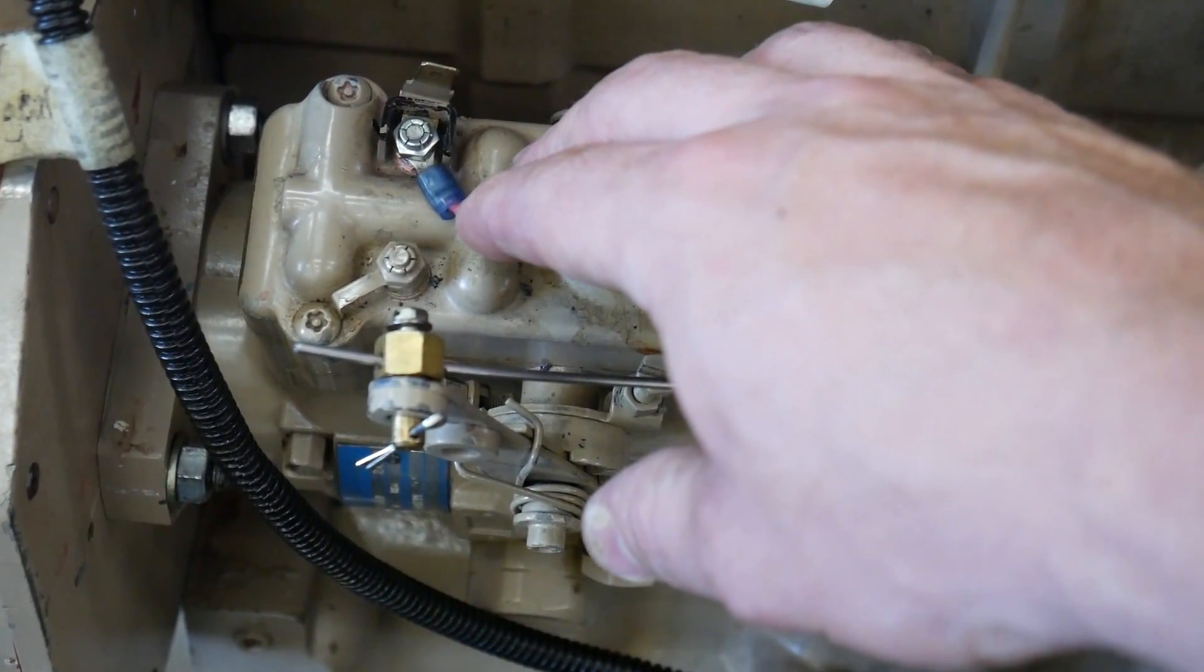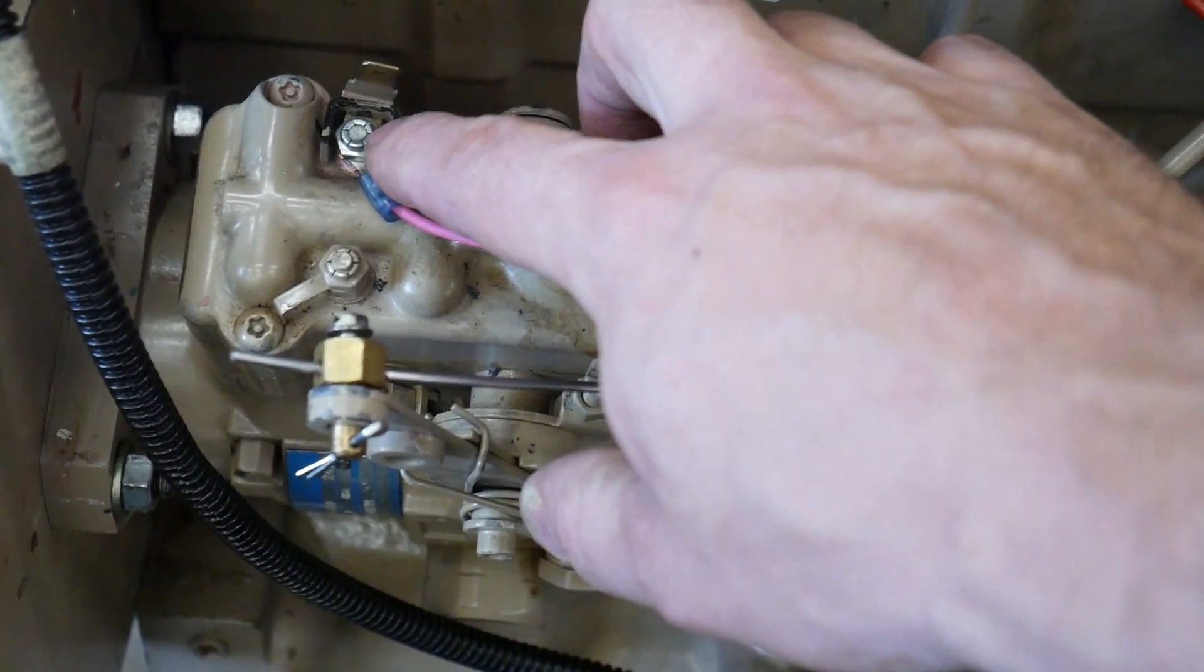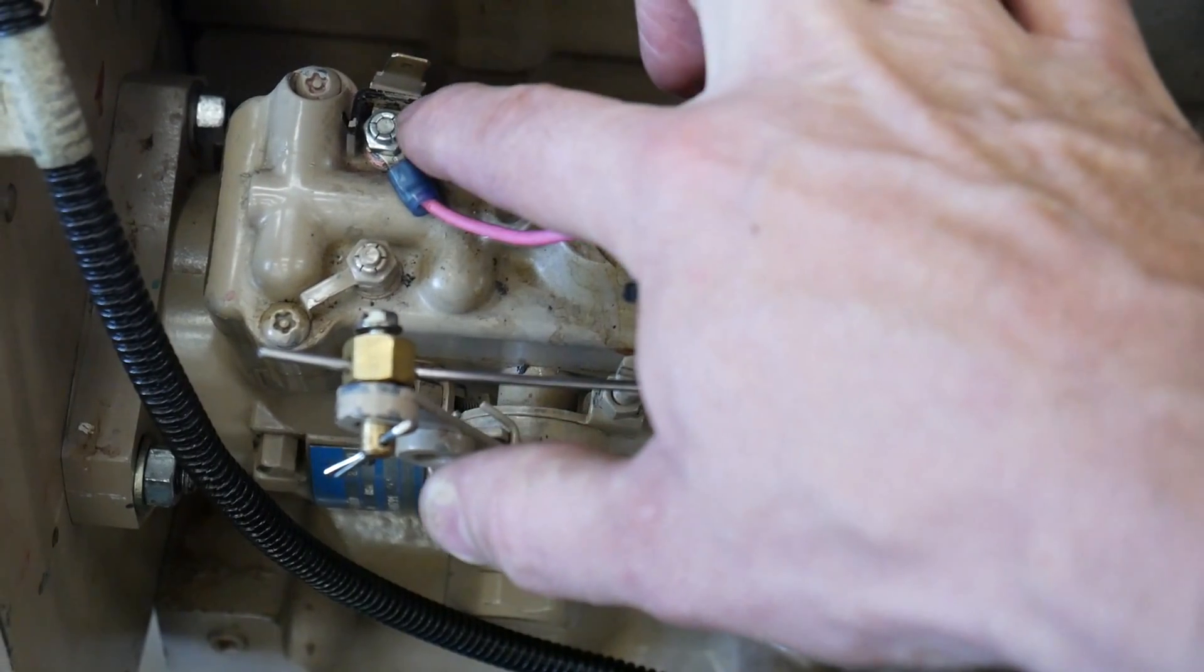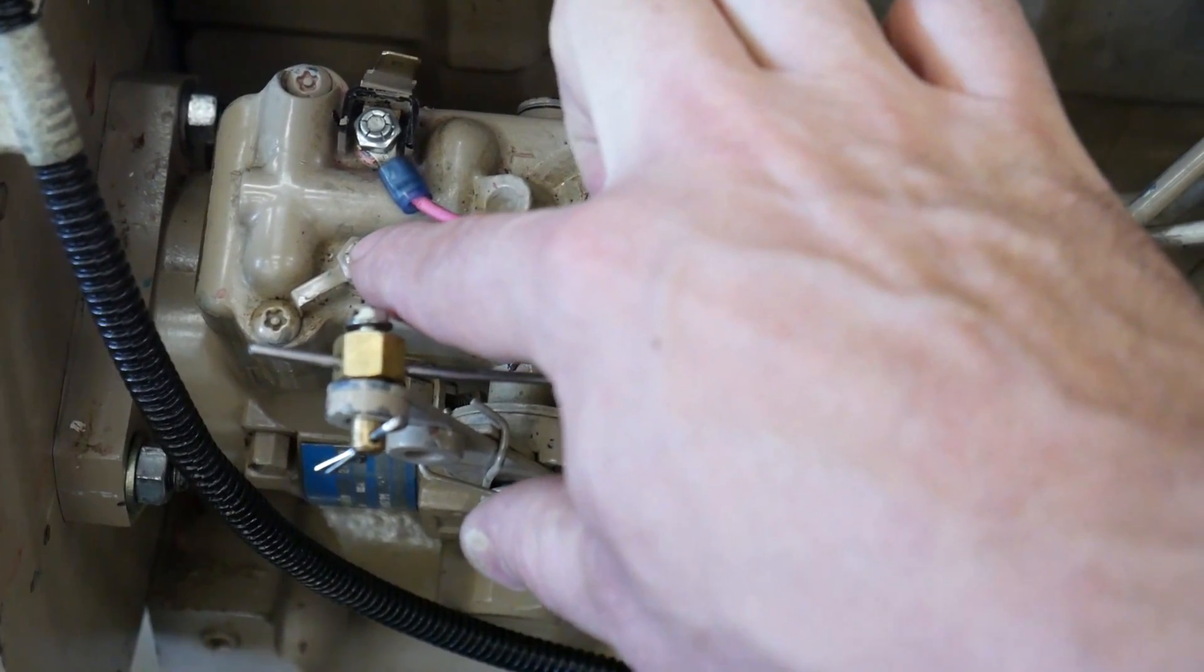We should see 12 volts between this terminal and the ground terminal right here. Because these ground terminals are often covered in paint, another place you'd be able to do is just check any verified ground.